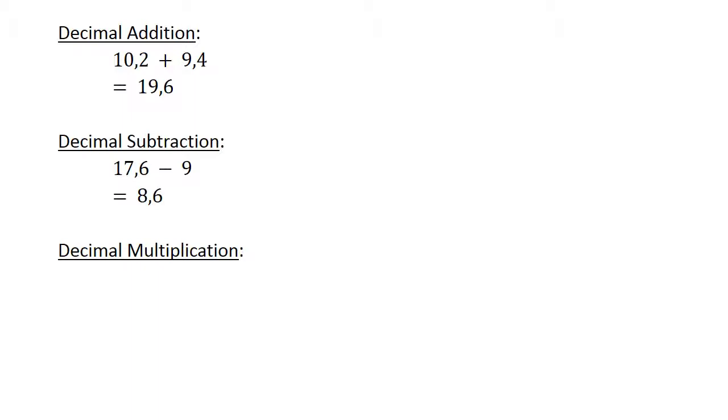Decimal multiplication. 0.3 times 0.02 equals. Now you can see 3 times 2 equals 6, and you just add all the places after the comma. 0.006.